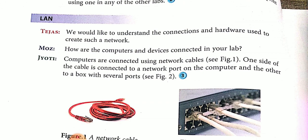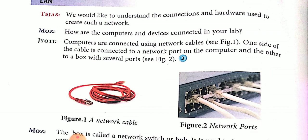The network has four types: LAN, WAN, and MAN. The first is LAN — the full form of LAN is Local Area Network. To understand the connection and hardware used to create such a network: how are computers and devices connected in your lab? In our lab, the computers are connected using network cables. One side of the cable is connected to a network port on the computer and the other to a box with a separate port.